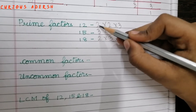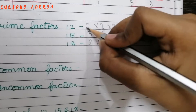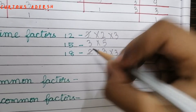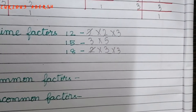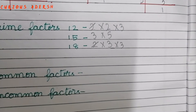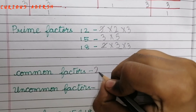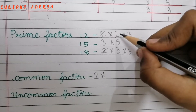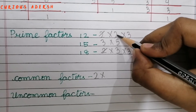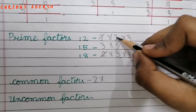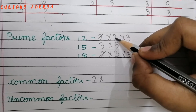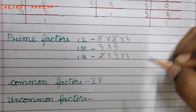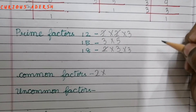Let's find a partner for this 2. Yes, that has a partner over here, so we'll write 2 under common factors. Let's find a partner for this next number. No, this one doesn't have any partners, so we'll cancel it and write it under uncommon factors.